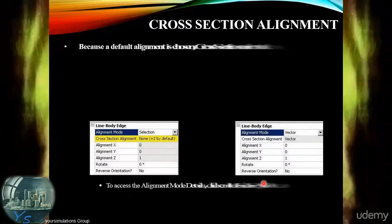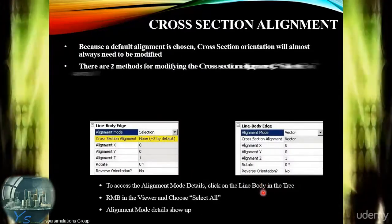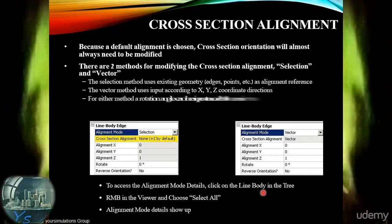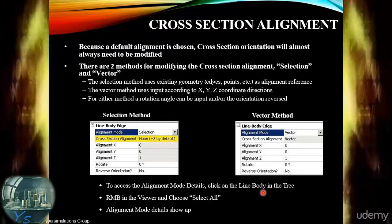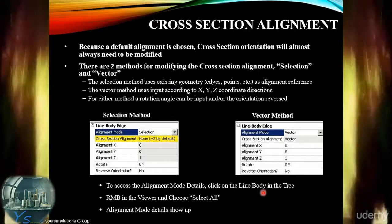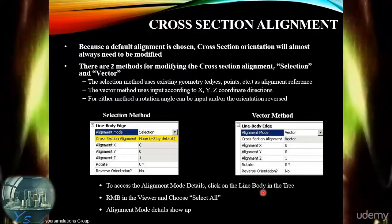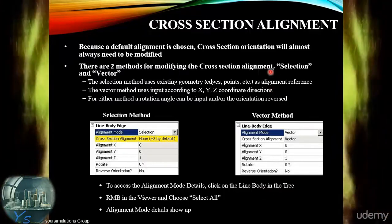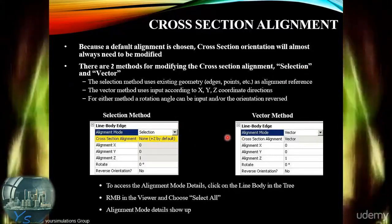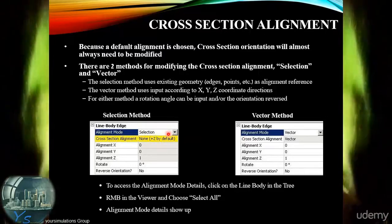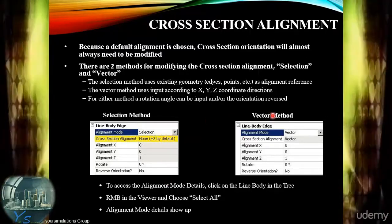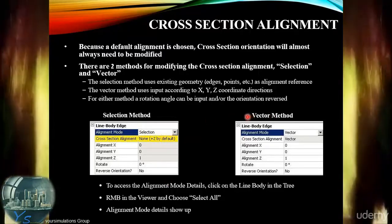It is possible that the cross-section hasn't been aligned correctly by default, so modifications may be needed to ensure correct alignment. There are two methods for modifying the cross-section alignment: by selection and by vector. The respective options for selection and vector are available as methods for alignment of the cross-section.